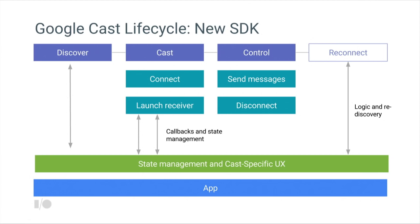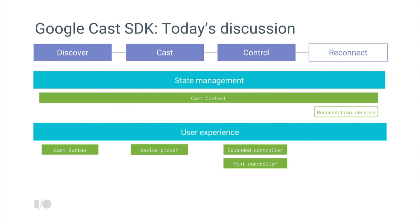In this new SDK we've implemented a much better abstraction, where Cast handles both the state transitions and provides default UX for this unique interaction model between a phone and a larger device. We're offering two major areas: state management and user experience. In state management you'll find something called the Cast Context — a singleton that manages all phases of state from discovery through connection and launching of the receiver app. We also offer an optional reconnection service.